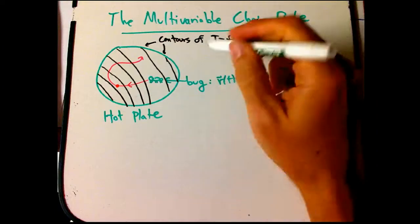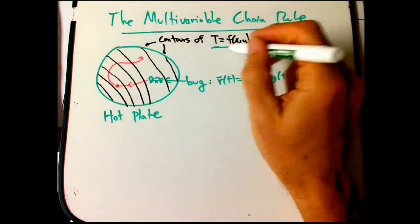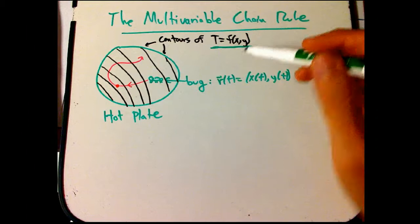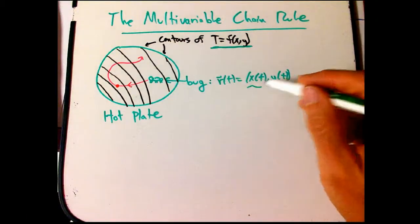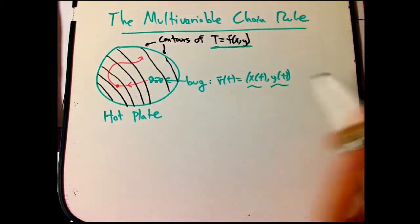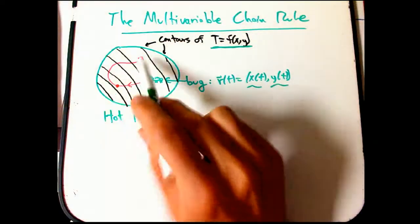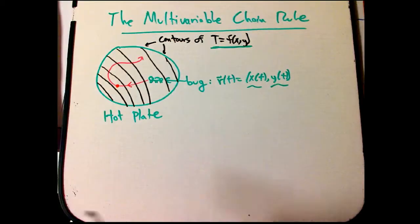So we've got a temperature, T, let's say is f of xy, and it's crawling around with r of t, the position vector, let's say explicitly x of t and y of t, describes its position. So here's the red path of the bug, and then here's the black of the contours of T.